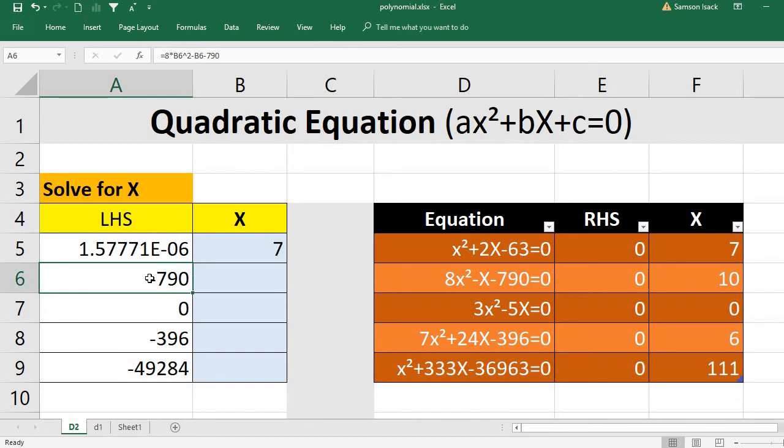I will put value on b5, but iterate it and find the value until this value, which is a5, becomes 0. And this is reverse. So I am going to press okay. See, this one changed to 7, whereas this LHS moved to 0.